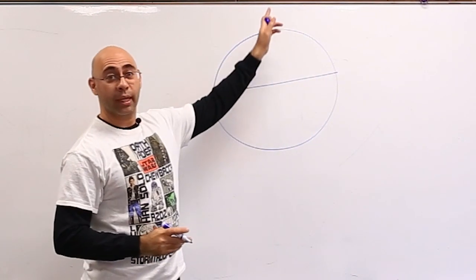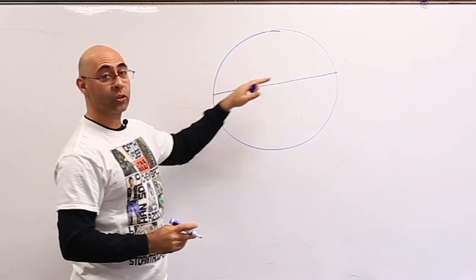Circumference, once again, is the distance going around the circle. Diameter is going across.